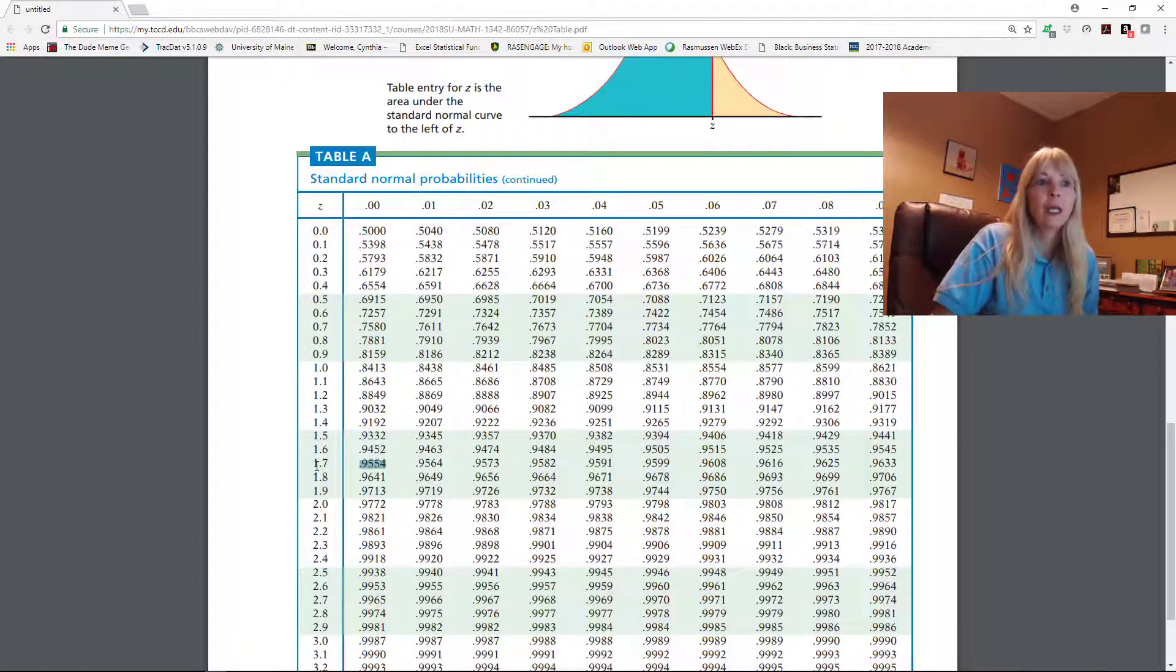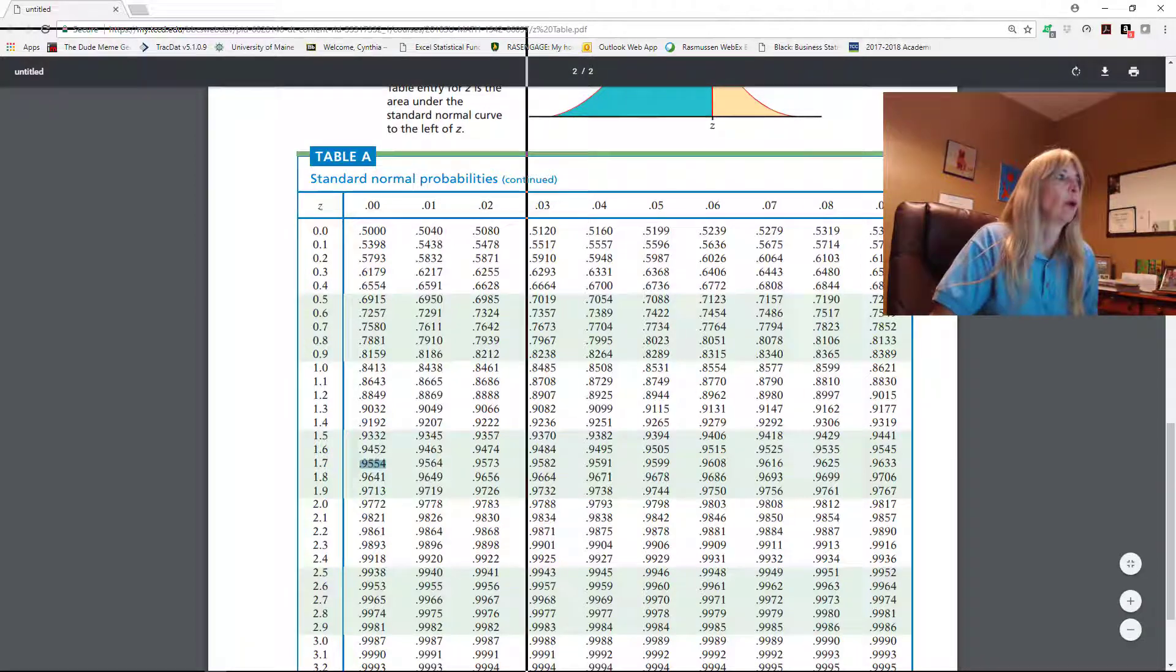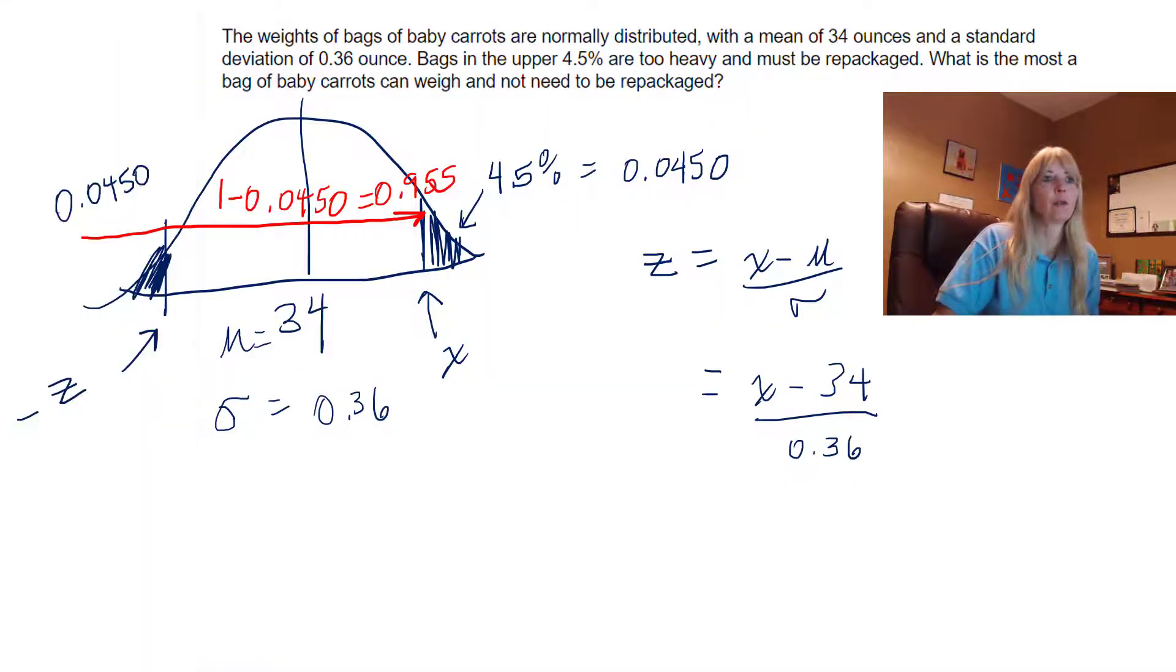So a Z of 1.70. However you do it, if you do the positive or negative side, you really need to understand the symmetry of why you can look up the positive or negative side.